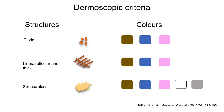Concerning the dermoscopic criteria, we evaluated this lesion using the analysis proposed by Kittler, dividing the structures and the colors. We considered the presence of clods, lines reticular and thick, and the presence of structureless areas.